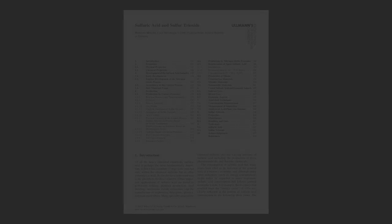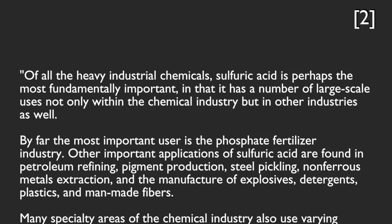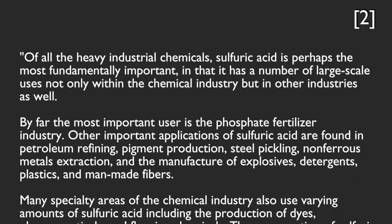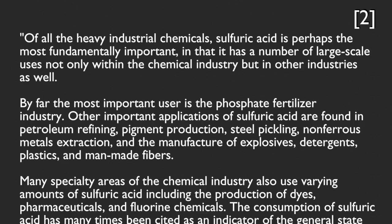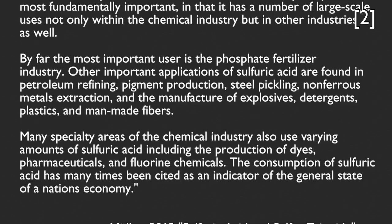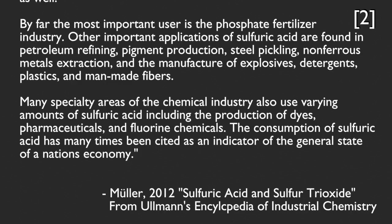A statement made in the 2012 article on sulfuric acid by Müller in Ullmann's Encyclopedia of Industrial Chemistry is worth reading in full: "Of all the heavy industrial chemicals, sulfuric acid is perhaps the most fundamentally important, in that it has a number of large-scale uses not only within the chemical industry, but in other industries as well. By far the most important user is the phosphate fertilizer industry. Other important applications are found in petroleum refining, pigment production, steel pickling, non-ferrous metals extraction, and the manufacture of explosives, detergents, plastics, and man-made fibers. Many specialty areas including dyes, pharmaceuticals, and fluorine chemicals also use varying amounts. The consumption of sulfuric acid has many times been cited as an indicator of the general state of a nation's economy."